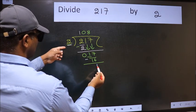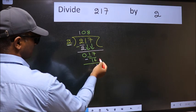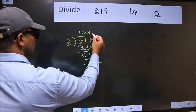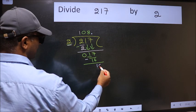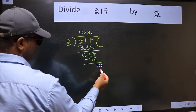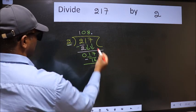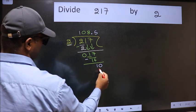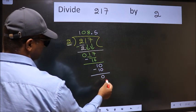1 is smaller than 2 and we don't have any more numbers to bring down. So we should put a dot and take 0. So 10. When do we get 10 in 2 table? 2 5s, 10. Now we should subtract. We get 0.